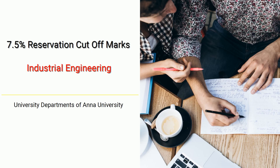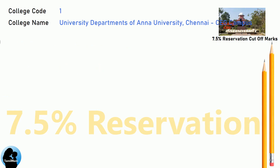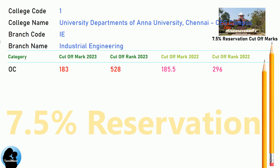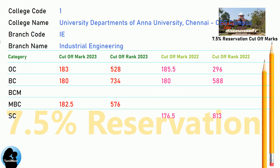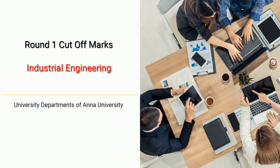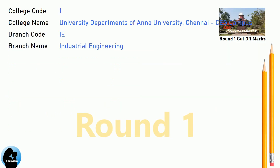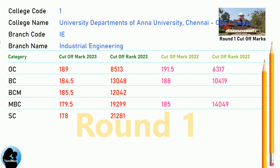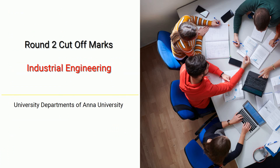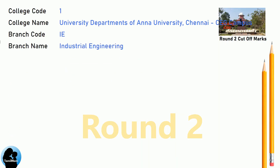DNA Cut-Off for Anna University Chennai CEG Campus in Industrial Engineering. DNA 7.5 Reservation Cut-Off for Anna University Chennai CEG Campus in Industrial Engineering. DNA Round 1 Cut-Off for Anna University Chennai CEG Campus in Industrial Engineering. DNA Round 2 Cut-Off for Anna University Chennai CEG Campus in Industrial Engineering.